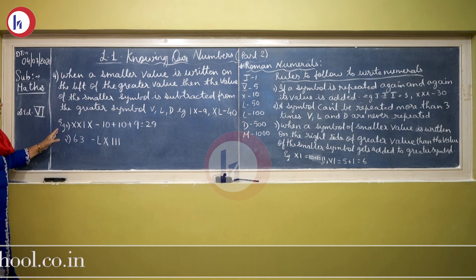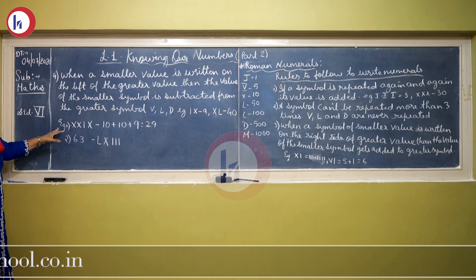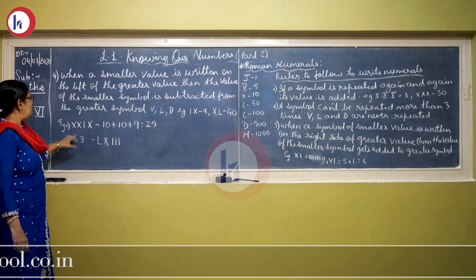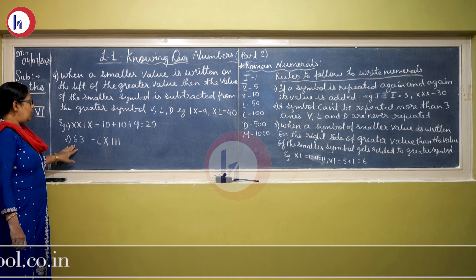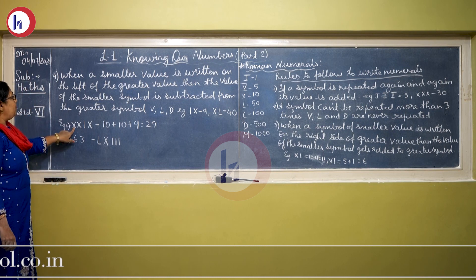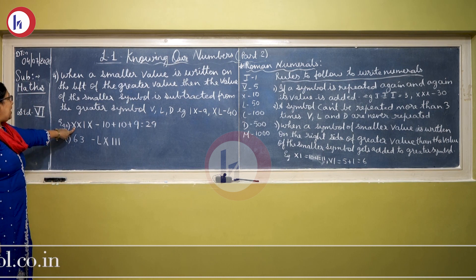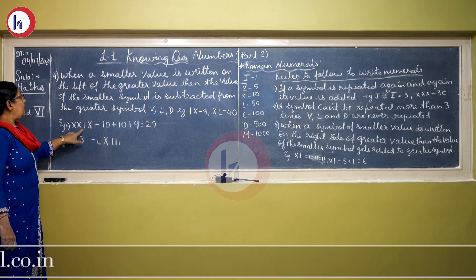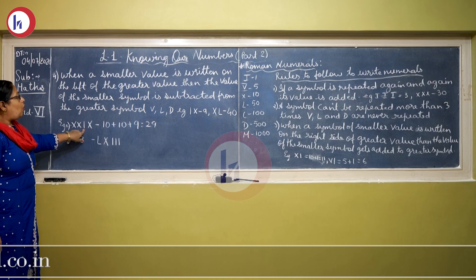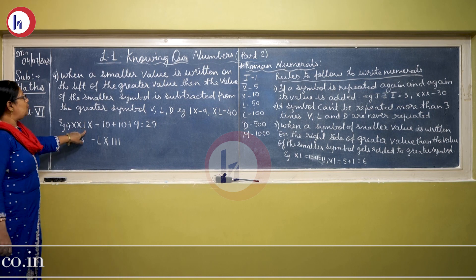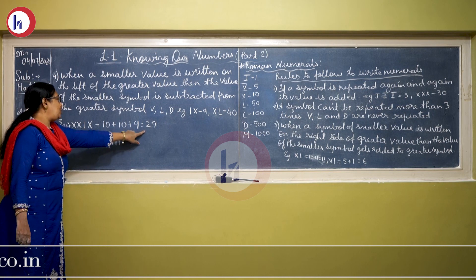Now same way, here is the example of how to write the numerals — from Roman numbers and from Hindu-Arabic numbers to Roman numerals. Here it is given: X is for 10, plus 10, and then IX which is 9. So 10 plus 10 plus 9 is 29.